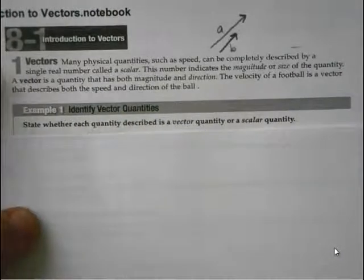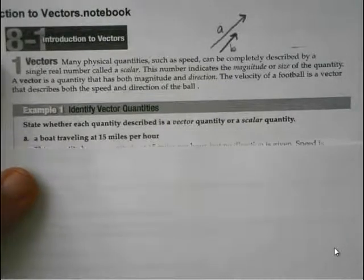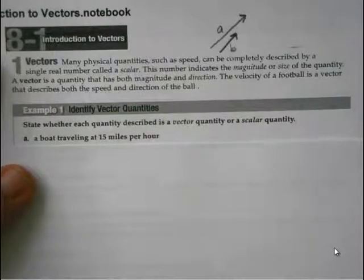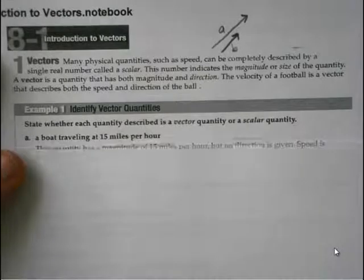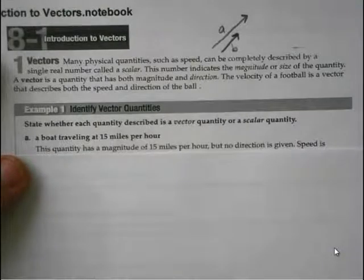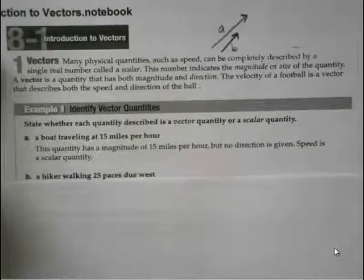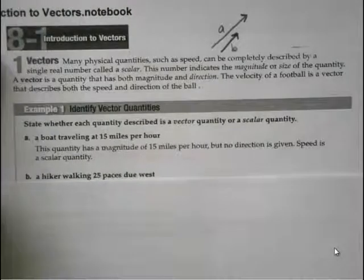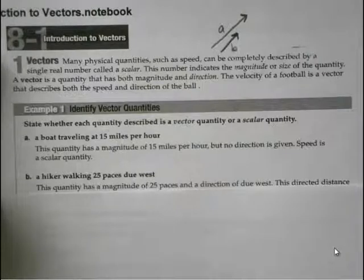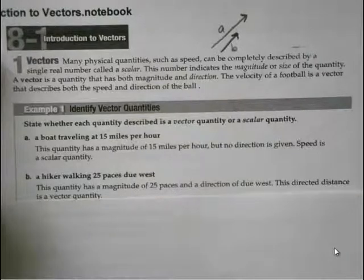State whether each quantity described is a vector quantity or a scalar quantity. A boat traveling at 15 miles per hour — that's just a scalar because it's just one number; the quantity has a magnitude of 15 miles per hour but no direction is given, so speed is a scalar quantity. A hiker walking 25 paces due west has magnitude and direction, so this is a vector. This quantity has a magnitude of 25 paces and a direction of due west — this directed distance is a vector quantity.